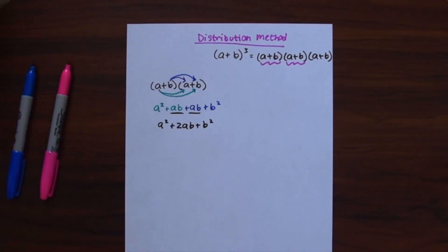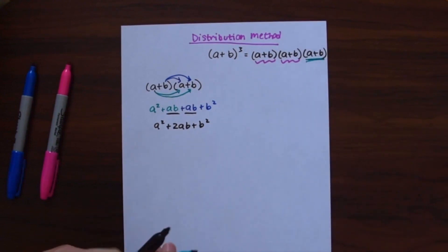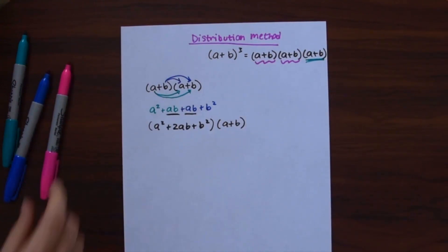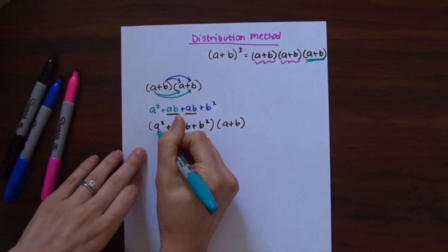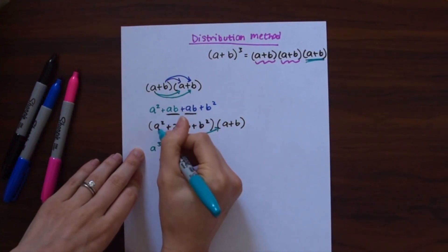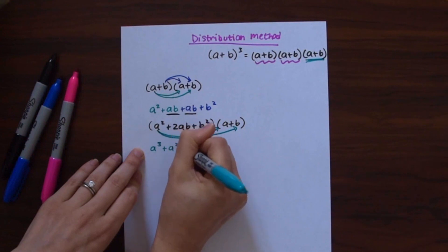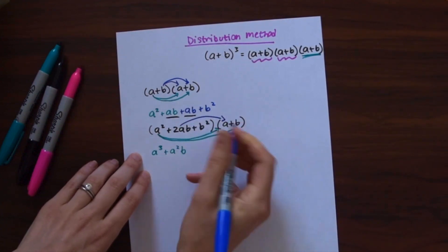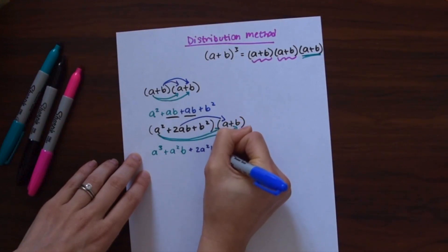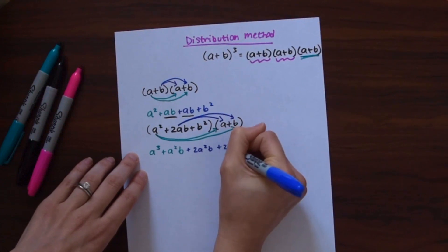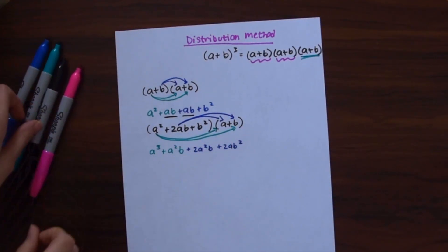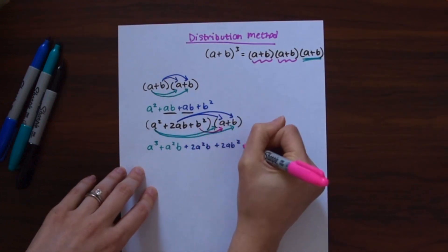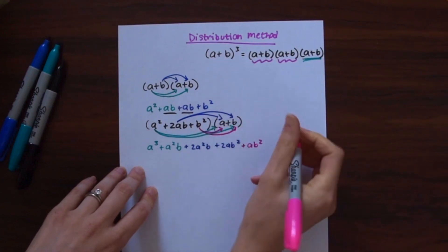We're not done yet because we still need to multiply this last (a+b) by what we just got. So we bring that down and distribute each term. a² times a gives us a³, a² times b gives us a²b. Then 2ab times a gives us 2a²b, and 2ab times b gives us 2ab². Finally b² times a is ab² and b² times b is b³.